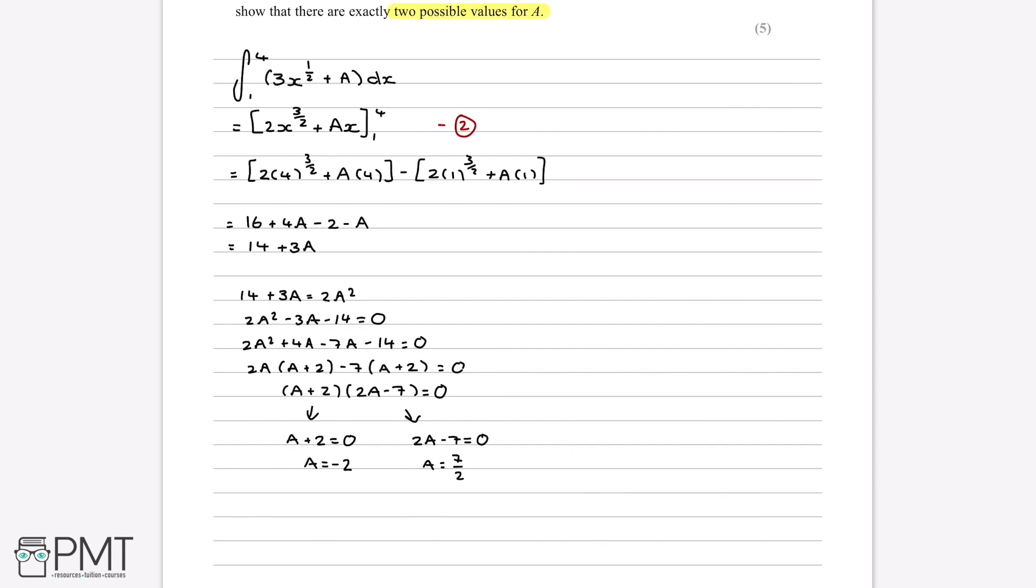Our next method mark comes from using these limits and then setting them equal to 2a squared. So this is now three marks in total. And then we get a method mark for solving our quadratic at all. And our last mark comes from getting the right answer. So getting the a is equal to minus 2 and 7 over 2. And this is all five marks for this question.